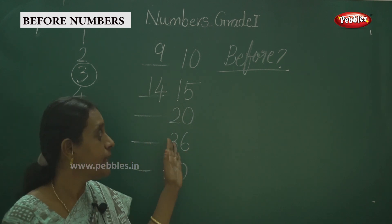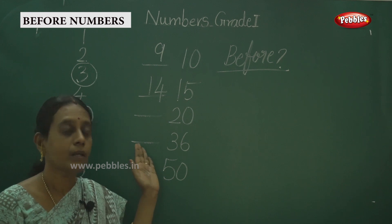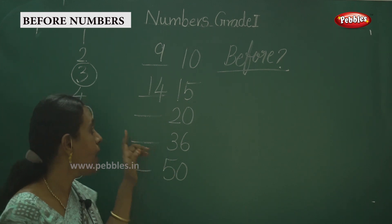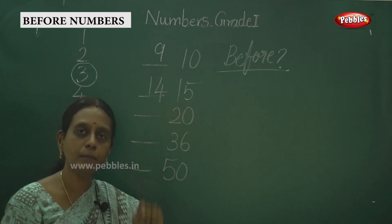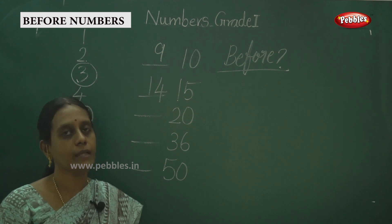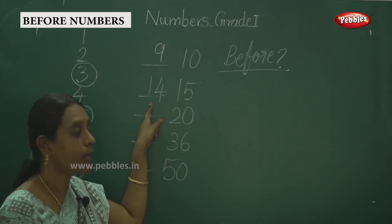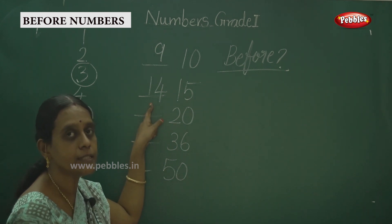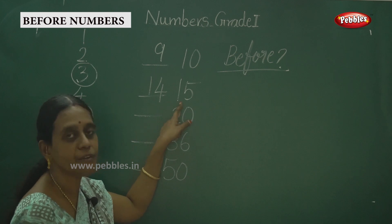Before? Before? In this session, what comes before? Everyone count: 11, 12, 13, 14, 15. So the number before 15 is 14.